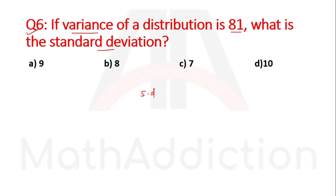Standard deviation is the square root of variance. Variance is standard deviation squared. So if variance is 81, standard deviation is square root of 81, which is 9. Option A is the right answer.